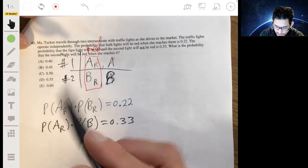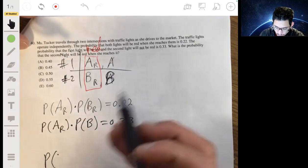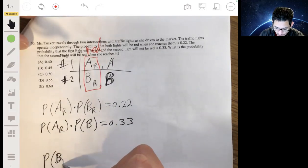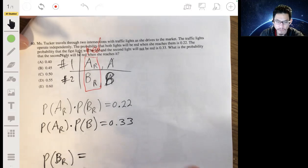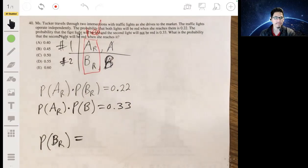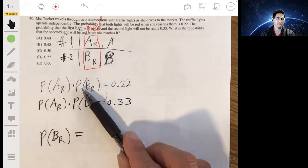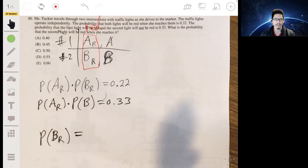And we want to just find in general, what's the probability of the second light being red? So the probability of BR, just in general, that's our goal. Okay, so here we kind of, we essentially have a system of equations here, if you are careful in spotting this.